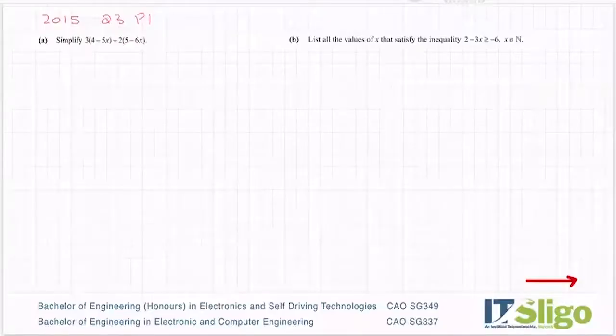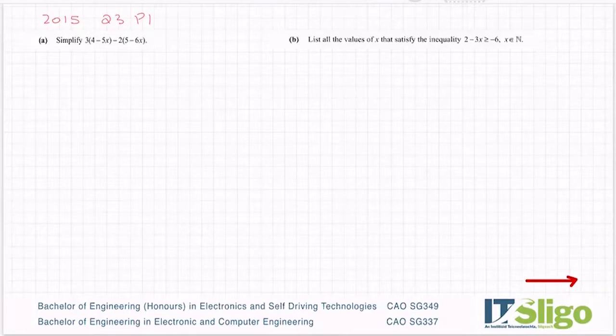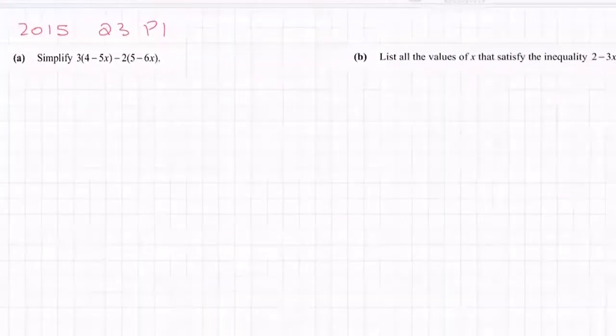The 2015 algebra question on the Leaving Cert ordinary paper, Part A, simplify 3 times (4 minus 5x) minus 2 times (5 minus 6x). Let's have a look at this.